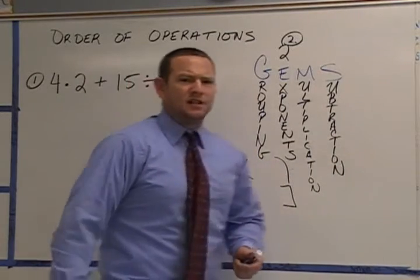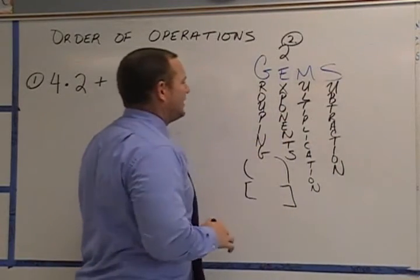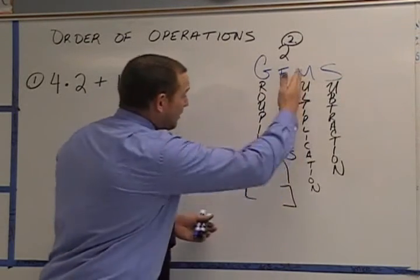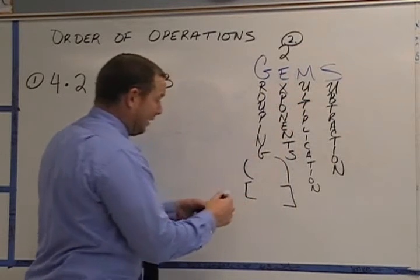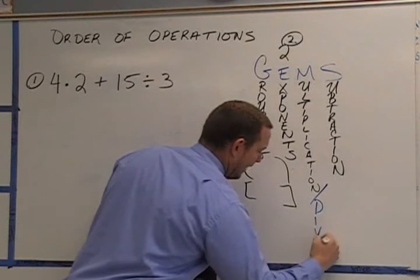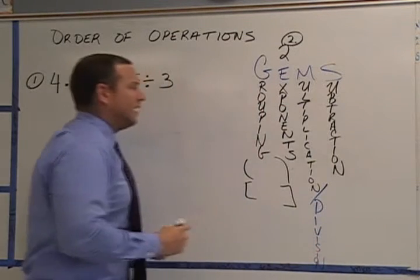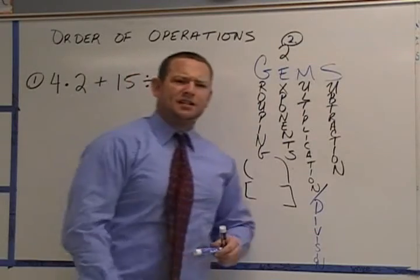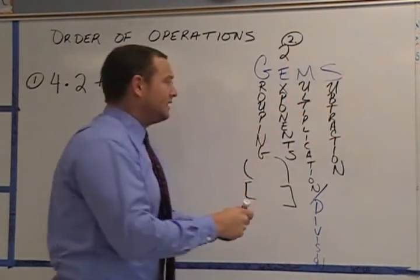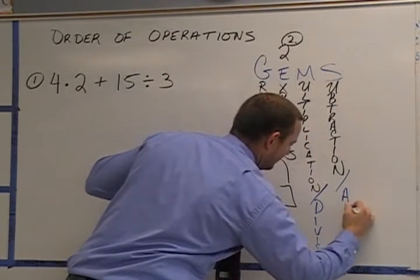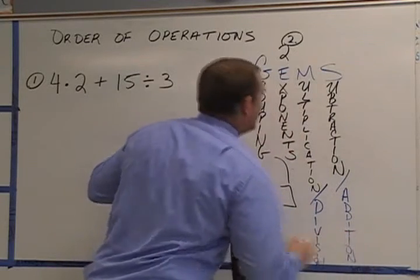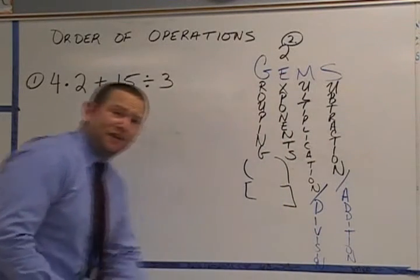Now, wait a minute. What about division? I don't see a D up here. Where does that go? Well, division is the brother or sister, the opposite of multiplication. So we're going to put it in the M column right here. We're going to put a little squiggle down here. We're going to put division down here. Now, what about addition? We can't forget about addition. Addition is the opposite of subtraction, the brother and sister. So let's put addition down here. Awesome job. Now, let's take a look at the problem over here.